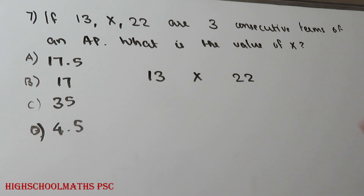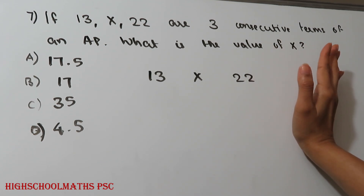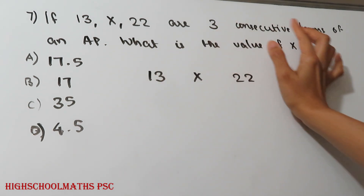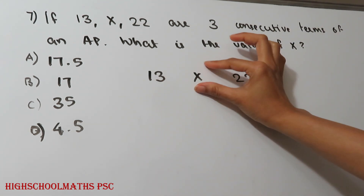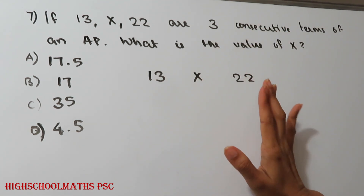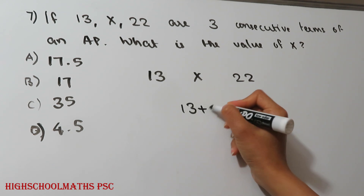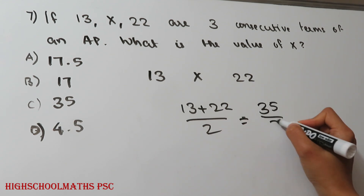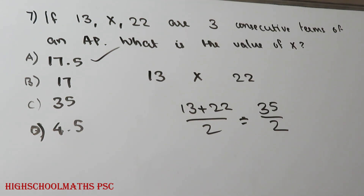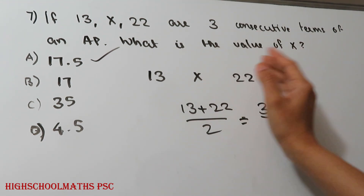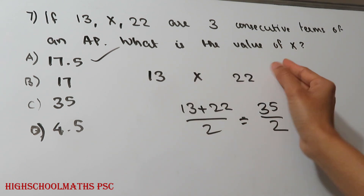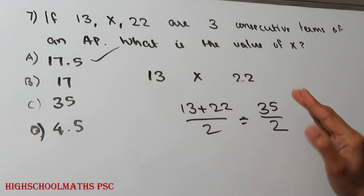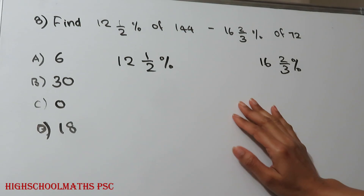Question number 7. If 13, x, and 22 are three consecutive terms of an AP, what is the value of x? In an AP, the middle term equals the average of the other two. We divide: x equals (13 plus 22) divided by 2. The answer is x equals 17.5.